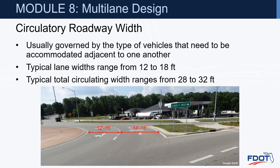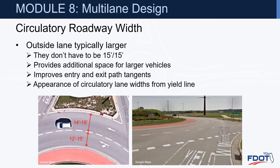Circulatory roadway width is usually governed by the type of vehicles that need to be accommodated adjacent to one another. Typical lane widths range from 12 to 18 feet, and the typical total circulating width ranges from 28 to 32 feet. The outside lane is typically larger, and you do not need to provide consistent lane widths within the circulatory roadway. This provides additional space for larger vehicles in the right lane, improves entry and exit path tangents, and improves the appearance of circulatory lane widths from the yield line.